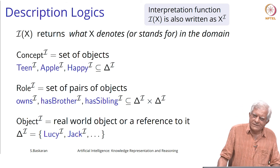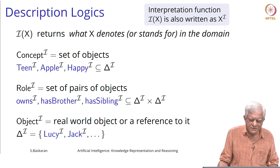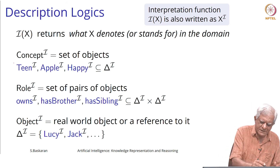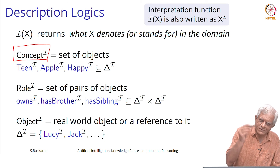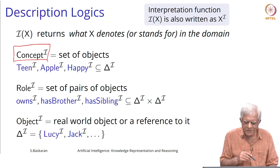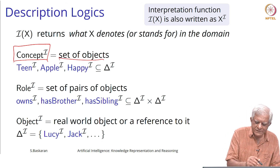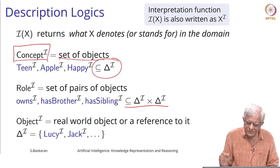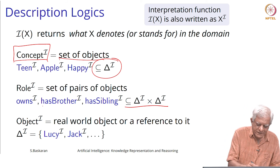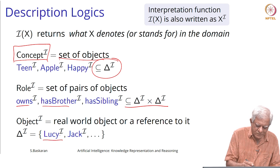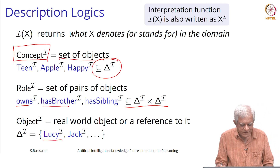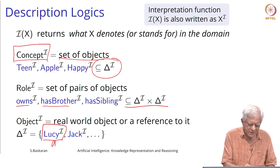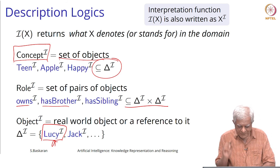We already know about interpretations from when we talked about logic — the same concept applies to description logics, because description logics are after all subsets of first-order logic. The interpretation of a concept, denoted by concept superscript I, is basically a set of objects, which means it is a subset of the top concept denoted by delta. A role is a subset of the domain cross domain. Individuals are mapped onto specific individuals — for example, the name Lucy refers to that particular individual Lucy superscript I.